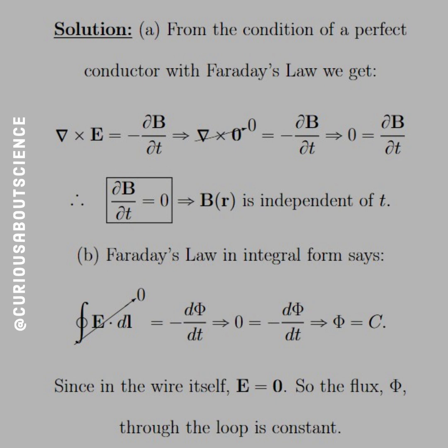All right. For part B, we can use Faraday's law again, but this time in integral form. What it says is that the closed line integral, or the loop, of E dot dl is equal to the negative time derivative of the flux. Again, this is magnetic flux. But again, if E is 0, then the integral goes to 0.